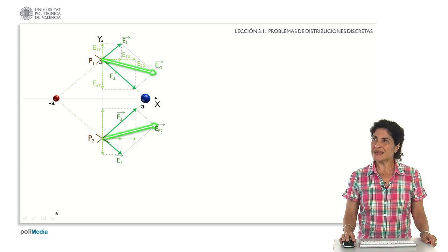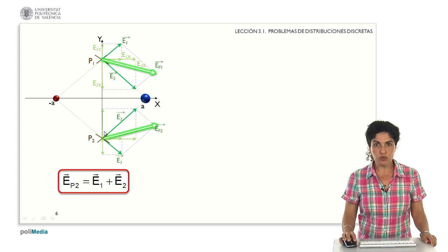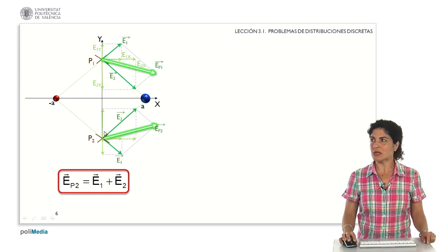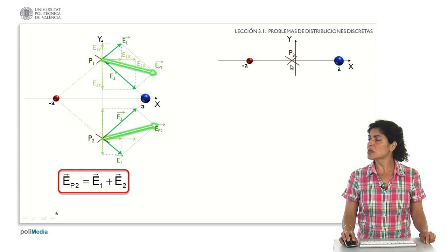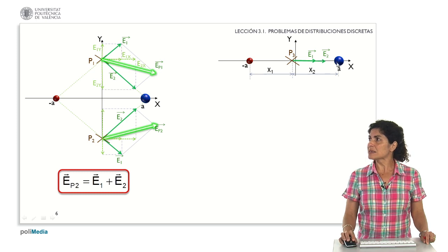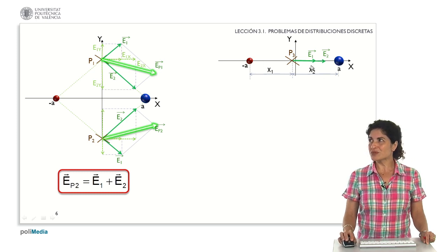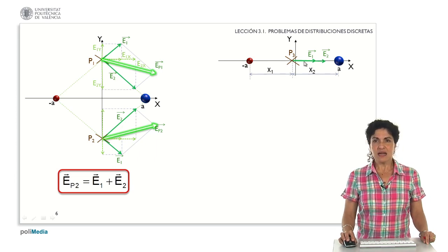Therefore, it seems that points outside the O axis are not clear candidates where we can find the point of zero total field as we intend to calculate. Let us now analyze point P sub 3. At this point, taking into account the conditions of attraction and repulsion of the two charges — attracting for the negative and repelling for the positive — the overall contribution is zero on the vertical axis, but it is not zero on the horizontal axis.